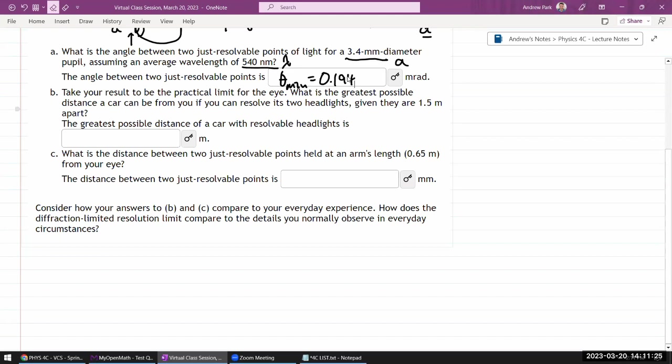It says take your result to be the practical limit for the eye. What is the greatest possible distance a car can be from you if you can resolve its two headlights given that they are 1.5 meters apart. So this is the picture I want you to have in mind. If there's a car coming towards you with the two lights and the question is telling you they are some distance apart, let me use D. Then from your vantage point where you are looking at it, you can make a couple approximations that are very convenient when this angle is small. And the approximation that's convenient is that the arc length here is basically this distance here. For small angles, you can take this straight segment between the two points to be the arc length.